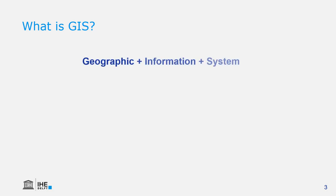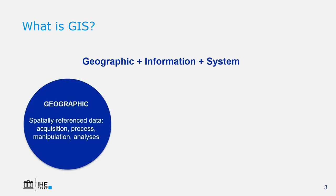So what is GIS? GIS consists of three words: geographic, information, and system. It's geographic because it deals with spatially referenced data. The acquisition of data, the processing, the manipulation, and the analysis are done in geographic space, with coordinates.